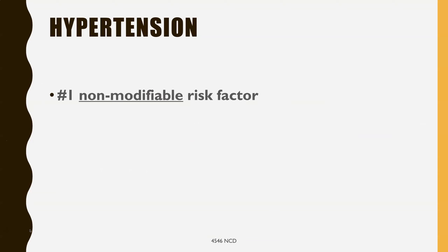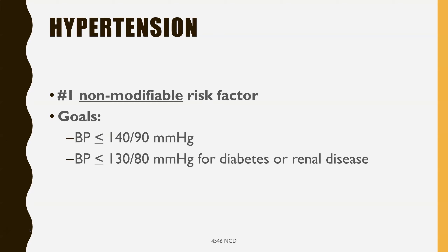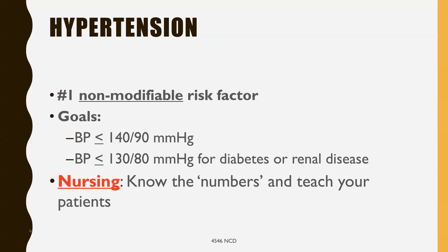Hypertension is the number one modifiable risk factor. The WHO goals for hypertension are to have a blood pressure below 140/90. If you have diabetes or renal disease, your blood pressure should be below 130/80. It's really important for you as a nurse to know these numbers and teach your patients. If a patient has a blood pressure above one of these ranges, educate them and have them see their primary care provider.